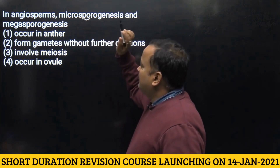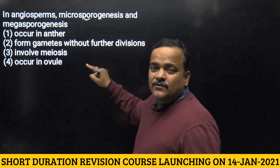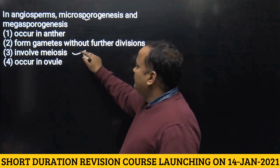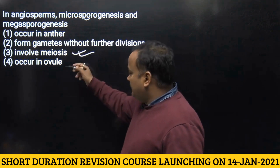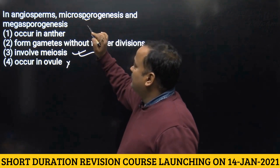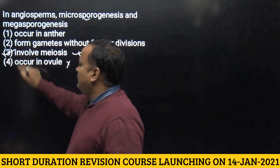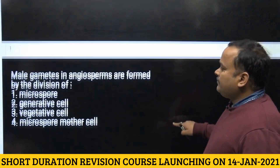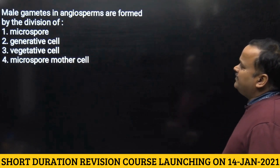The choice that says it forms gametes without further division is not true, because mitosis after meiosis takes place. The choice that says it involves meiosis is true. The fourth choice about casino view is not correct. So the answer will be the third option — it involves meiosis.